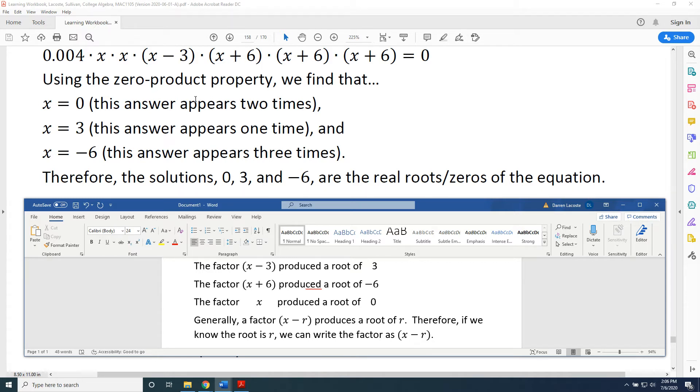and we found that the associated roots were 3, negative 6, and 0. Let's see if we can discern a pattern here. The factor x minus 3 produced a root of 3. The factor x plus 6 produced a root of negative 6. The factor x produced a root of 0.